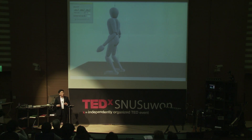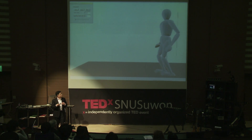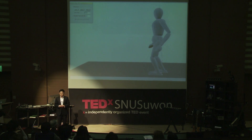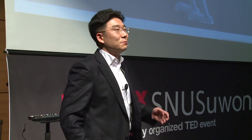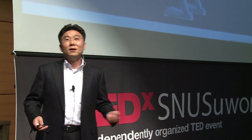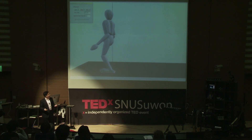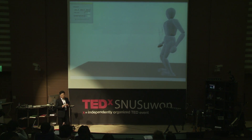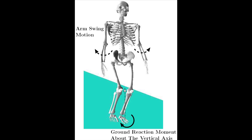This made me wonder how I can create a robot walking with arm swing motion, so I worked on this problem — many hours thinking about how to solve it. Finally, the answer came from biomechanics. This arm swing motion is, in fact, related to the ground reaction moment between the foot and the ground.